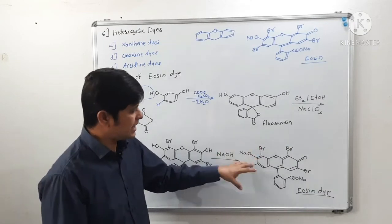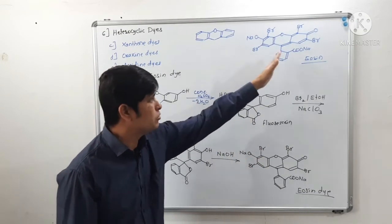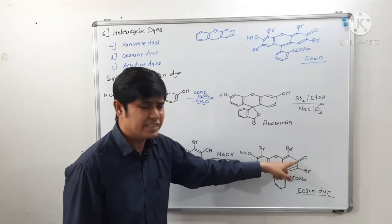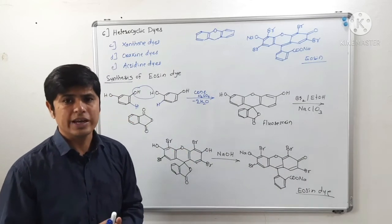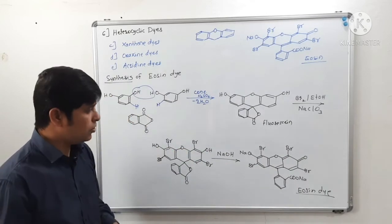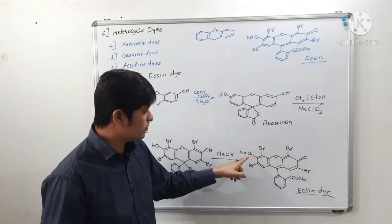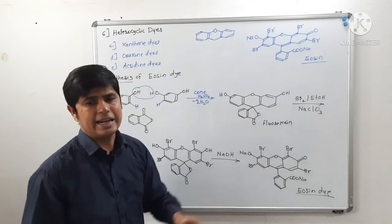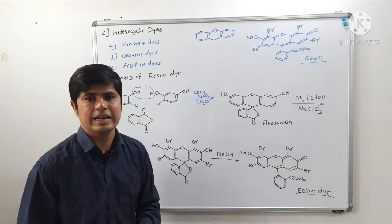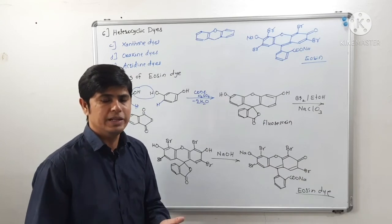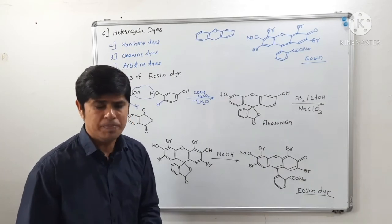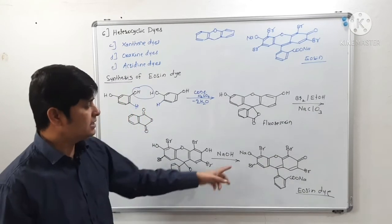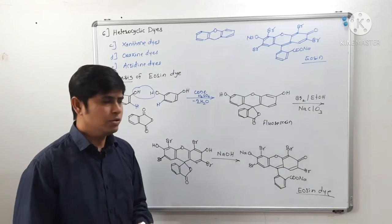In xanthin dyes, the quinoid structure acts as the chromophore in the molecule. While groups such as the sodium salt of phenol and bromine act as auxochromes. So hydroxyl and bromine groups are acting as auxochromes, and the quinoid structure is acting as a chromophore in xanthin dyes. Eosine is an example of a xanthin dye.